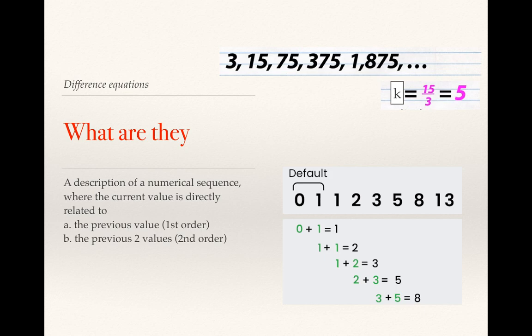So if you were to try to get the 13th value there, it's the sum of the previous two. So you're adding two previous terms together, in which case you're using two previous terms, so we call it a second order difference equation.